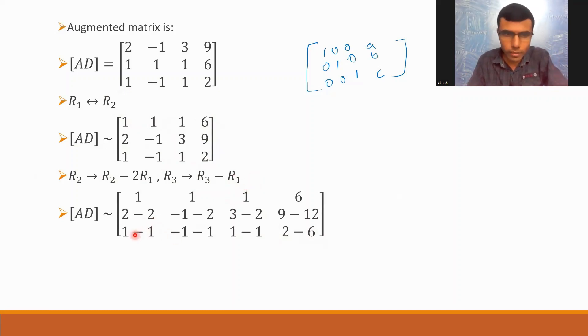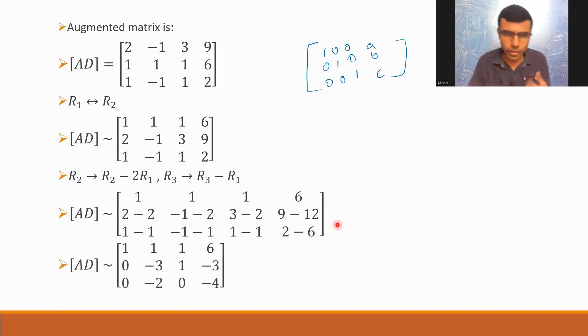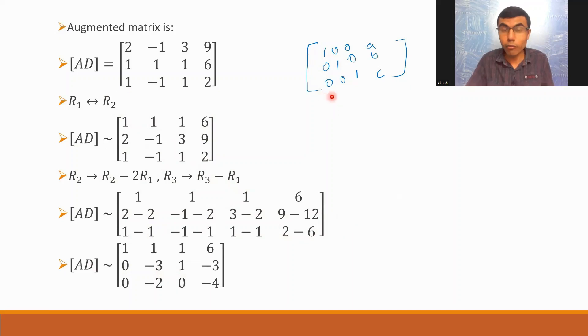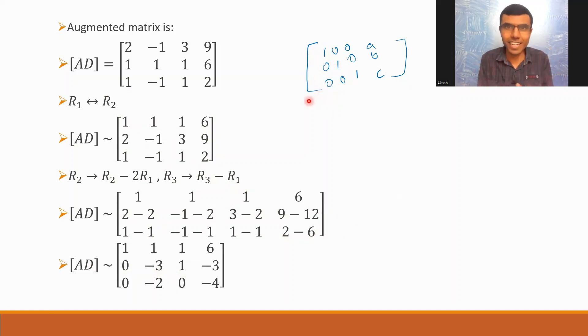If you simplify all the terms, you would get this result. Now, my first part is done — I wanted to get 1, 0, 0 in the first column. It's done. One of my objectives is complete.